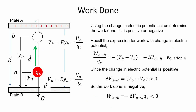Using the change in electric potential, let us determine whether the work done is positive or negative. Recall the expression for work with change in electric potential, equation 4. From previous calculations we know that the change in electric potential is positive, so the work done is negative.